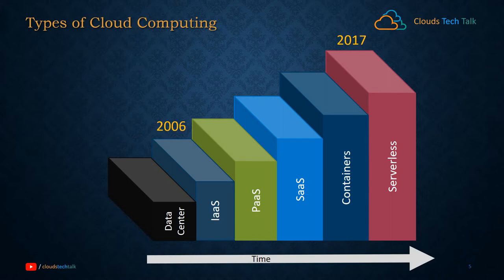With software as a service, you don't need to worry about infrastructure, middleware, platform, or even maintaining the application — you just consume the benefits and features of a specific application provided by a cloud service provider. For example, Gmail: we don't know how Google operates or maintains its hardware, platform, or even the Gmail application. You are just consuming the service and features of Gmail — that is software as a service.